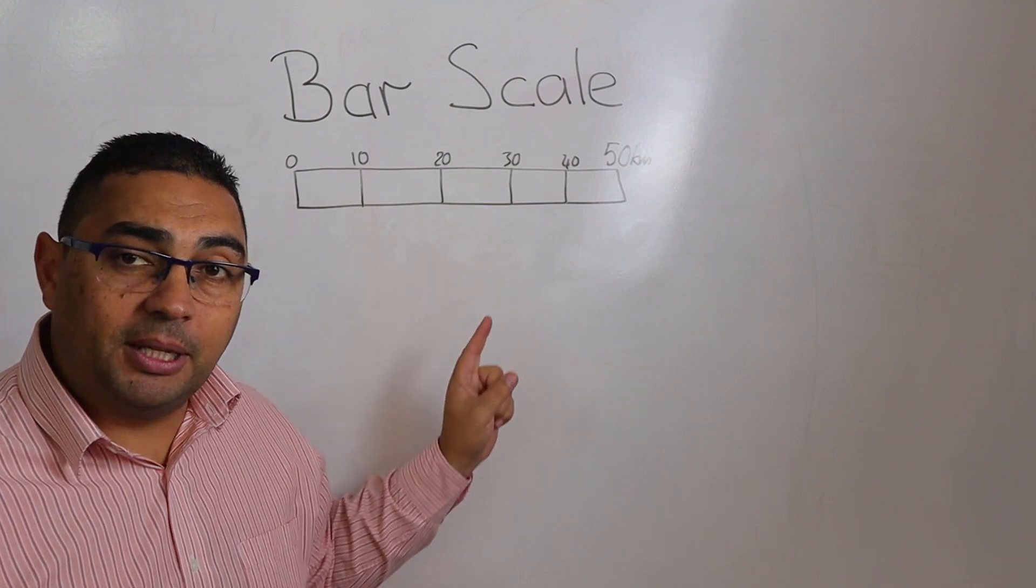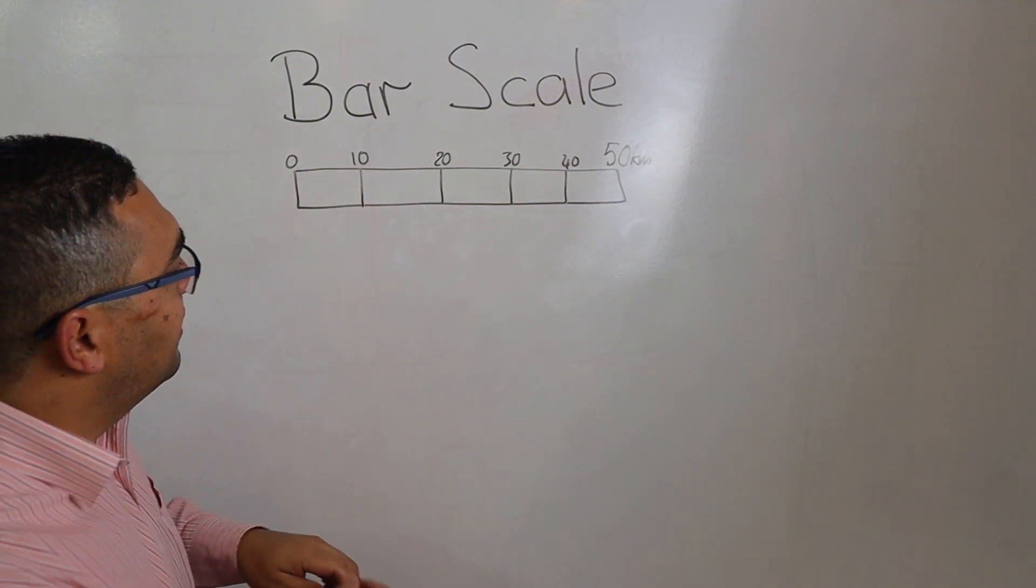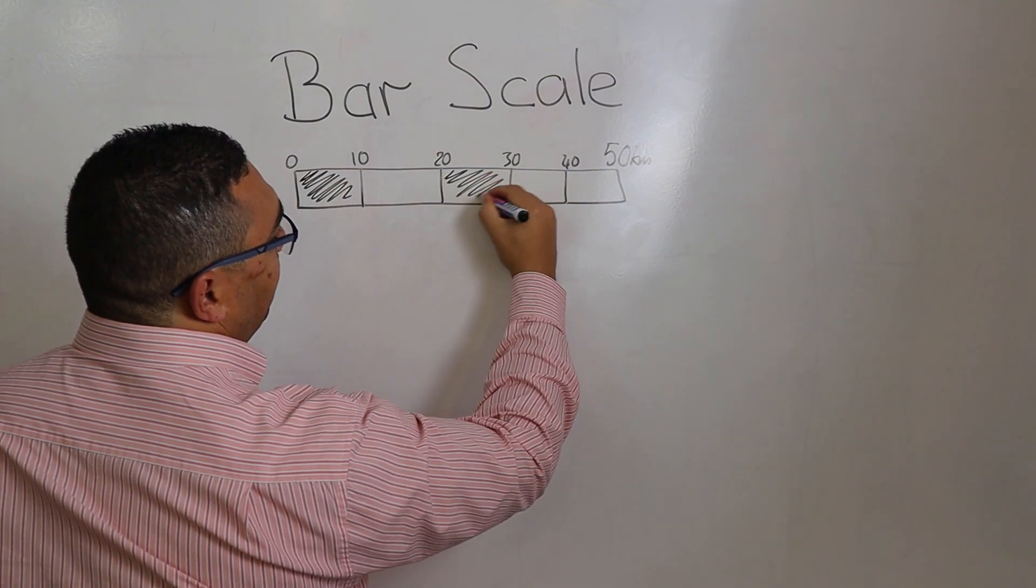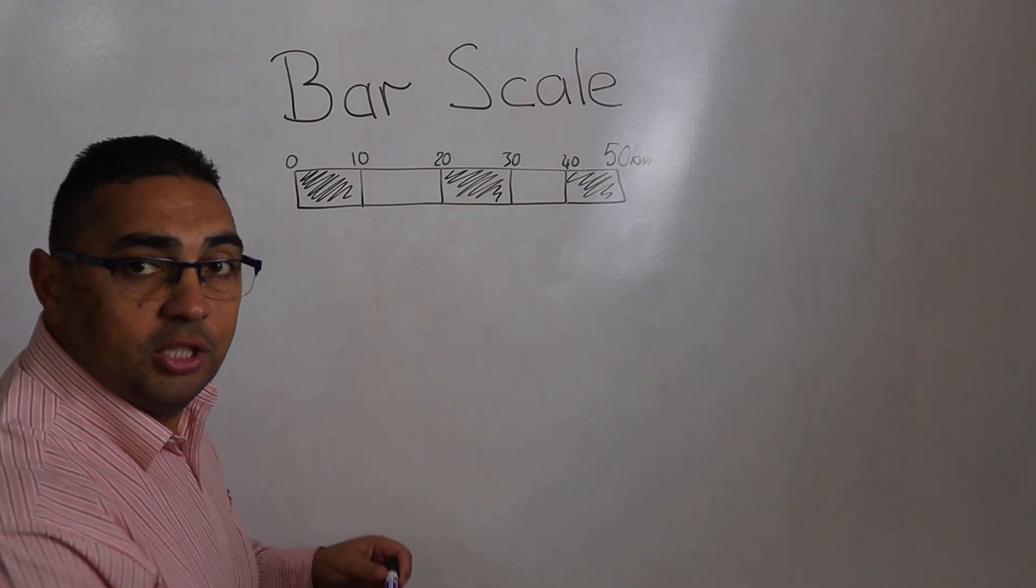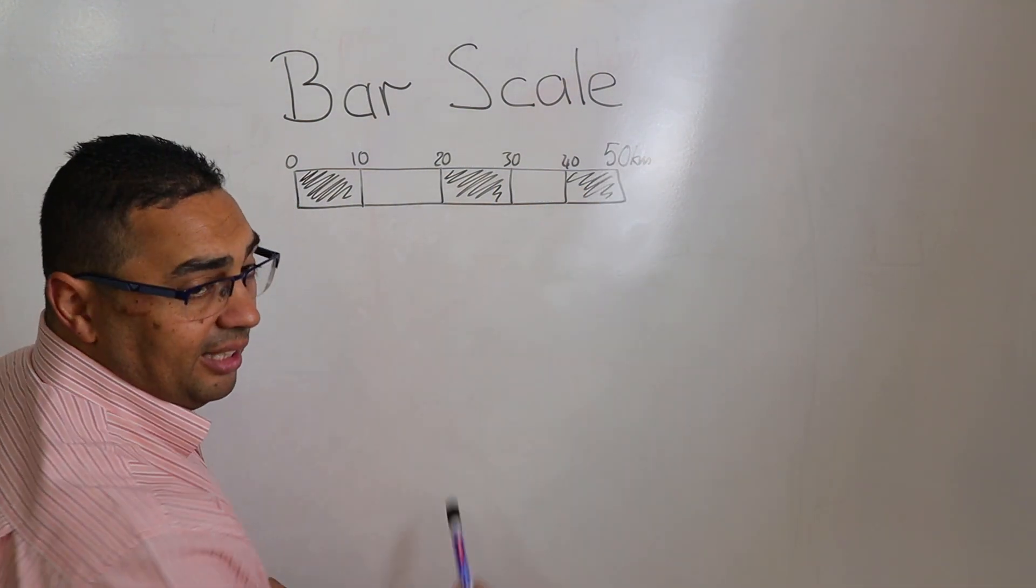So here you can see a typical bar scale that you'll find on a map. And we can see these bars, I'm just going to color in every second one. And we can see that it ranges from zero all the way through to 50 kilometers.